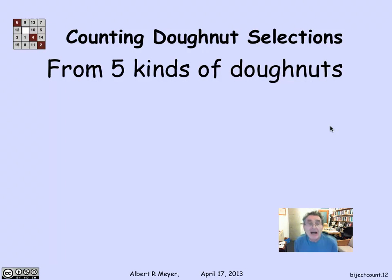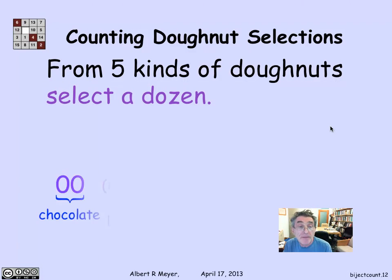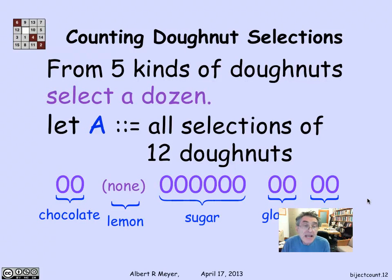One more example of bijection counting that is kind of fun and interesting and will illustrate the fact that we learn something by finding a bijection, even if we don't know how to count either one yet. So what I'm interested in is suppose I have a situation where there are five kinds of donuts, five different flavors of donuts, and I want to sort of select a dozen. I want to know how many selections there are. So for example, these little O's represent donuts. I might choose a selection of a dozen by choosing two chocolate and no lemon. I don't like those so much. And six sugars and two glazed and two plain. So there are 12 donuts here using four out of the five possible flavors of donuts. This is what I'll call a selection of a donut. And I'd like to know how many such selections of donuts are there?